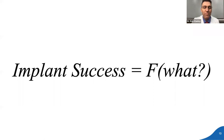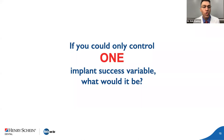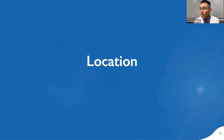This matters because implant success is a function of many variables, and this is where a lot of confusion enters our practice when we say 'I don't know why this implant failed.' There are a lot of success criteria, and of all of them, one is probably more impactful than the others. If you could only control one implant success variable, what would it be? In the first lecture the answer was location, location, location. Today we talk about implant design.